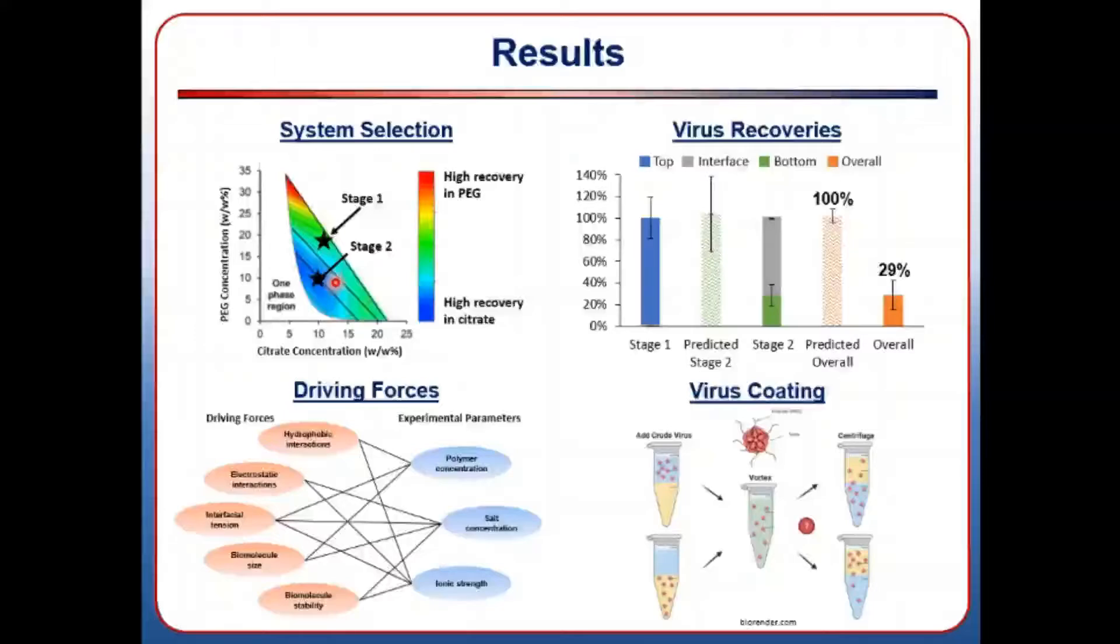In our experiment shown here on the right, the recovery in the first stage worked quite well, but recoveries in the second stage were much lower than expected. This reduced our overall recovery as well. This may be caused by the PEG molecules adhering to the virus during the first stage and strengthening the interaction between the virus and the PEG-rich phase, so we plan to run more experiments where the virus begins in either the PEG or the citrate to test this hypothesis.